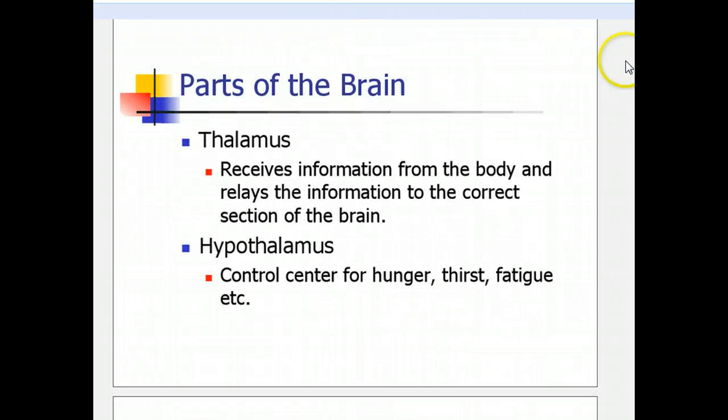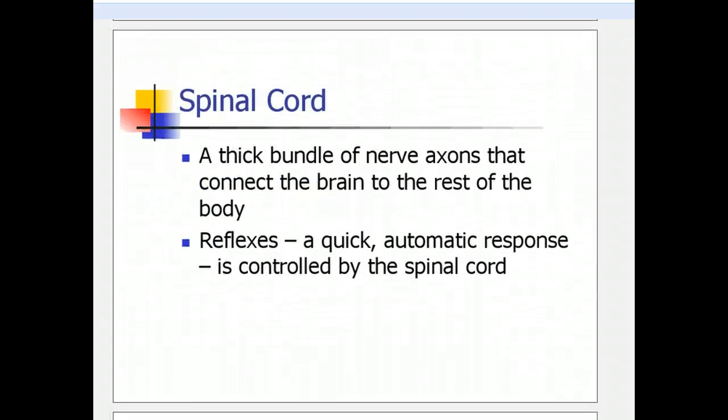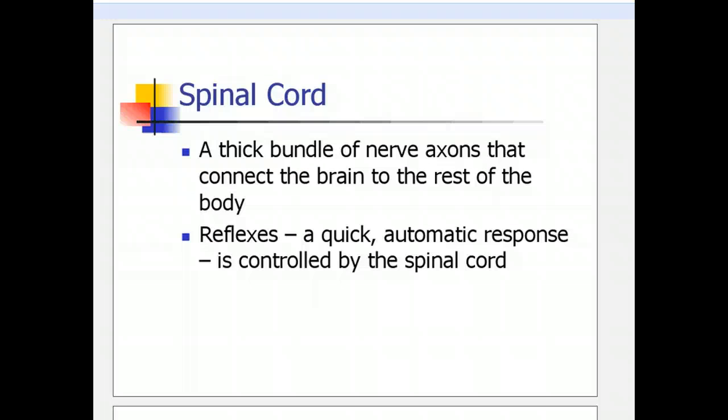Now that we've learned about all the different parts of the brain, let's talk about the spinal cord. Your spinal cord is a thick bundle of nerve axons — that long section of a nerve cell — that connects the brain to the rest of the body. Your spinal cord essentially has two jobs. First, it sends information from other parts of your body to your brain. Second, it mediates reflexes. A reflex is a quick automatic response controlled by the spinal cord — reflexes don't go to your brain, they go straight from the spinal cord.